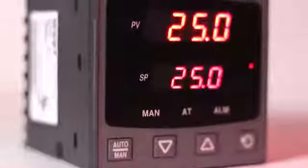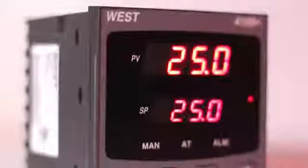Set point ramping is available on most of our controllers. It is used to protect the process or equipment from quality problems or damage that may occur if sudden changes were allowed to happen in the process value.